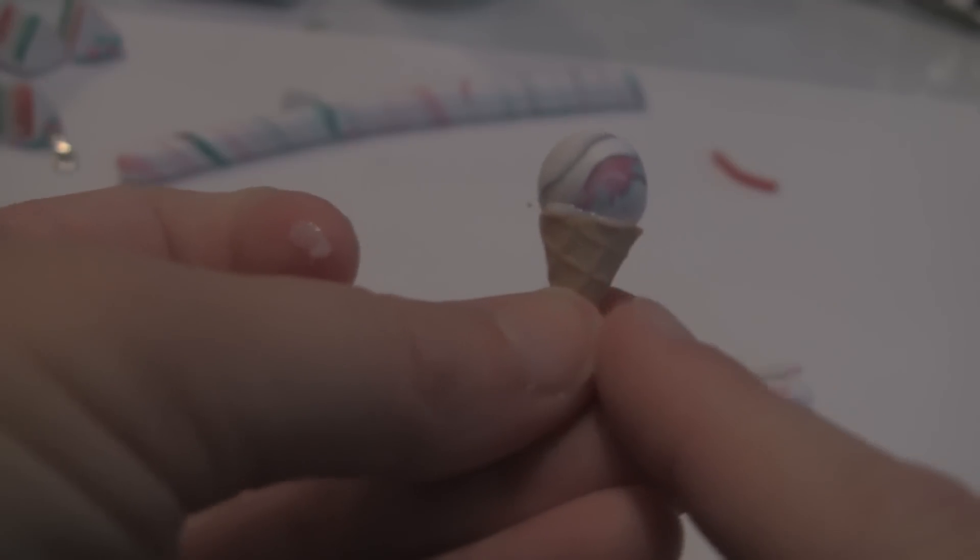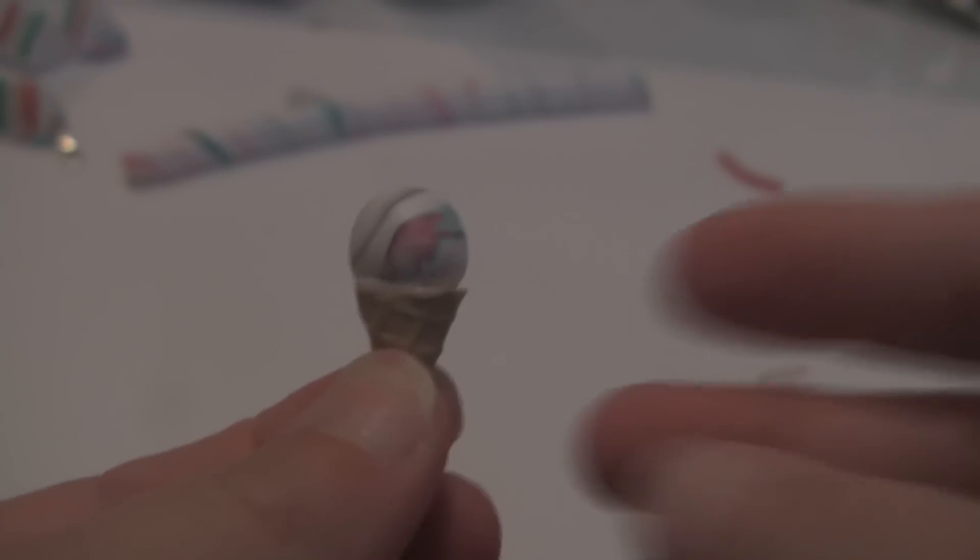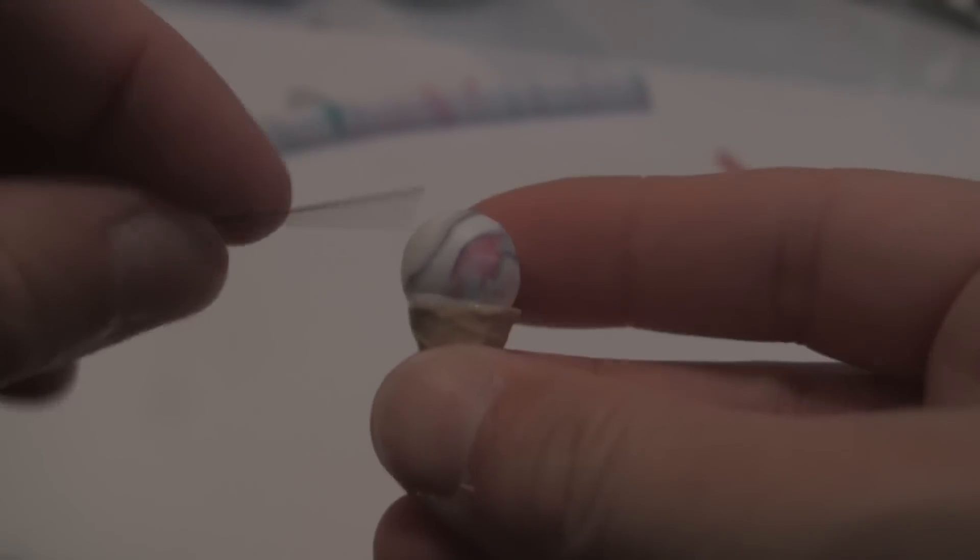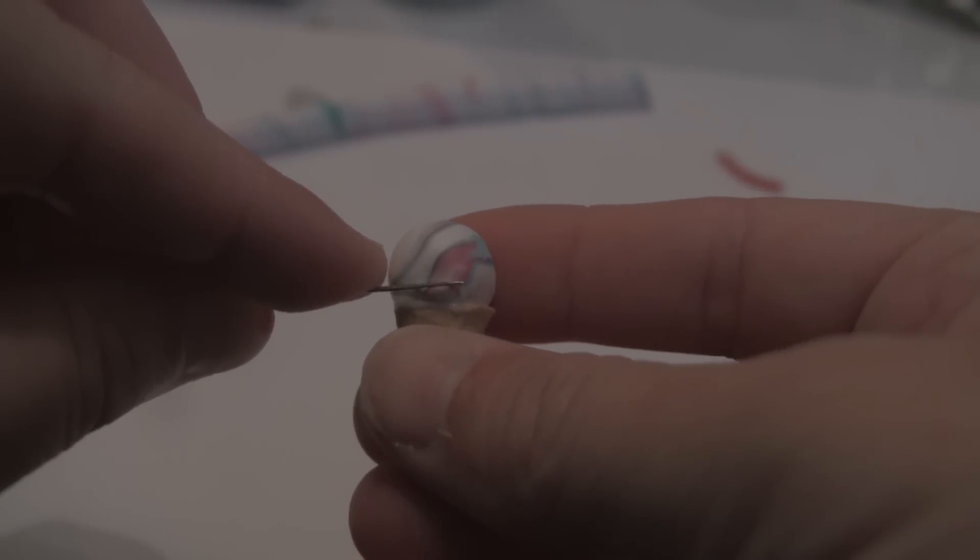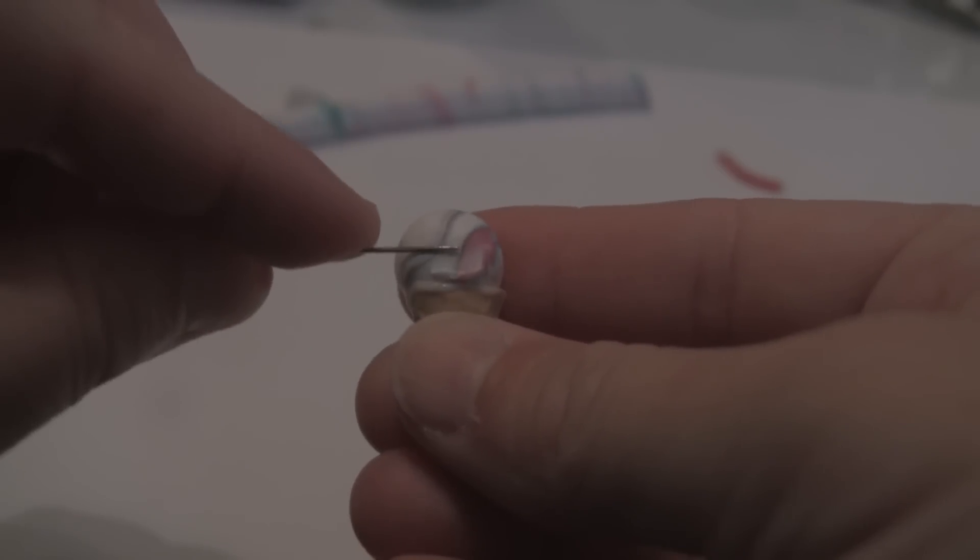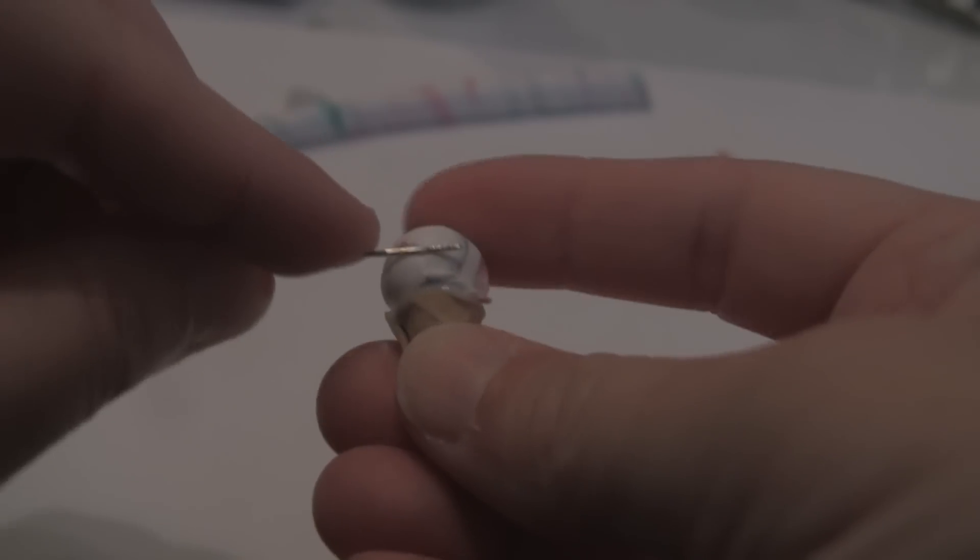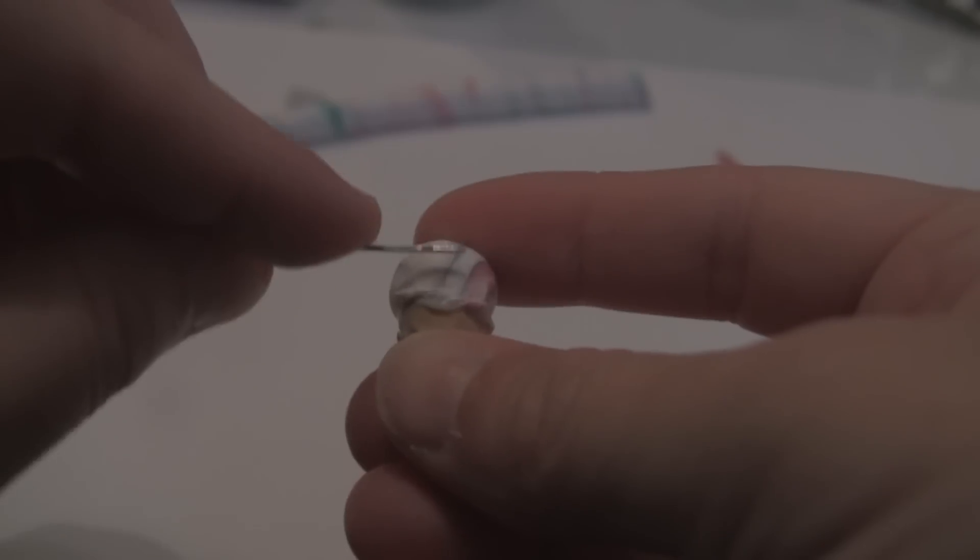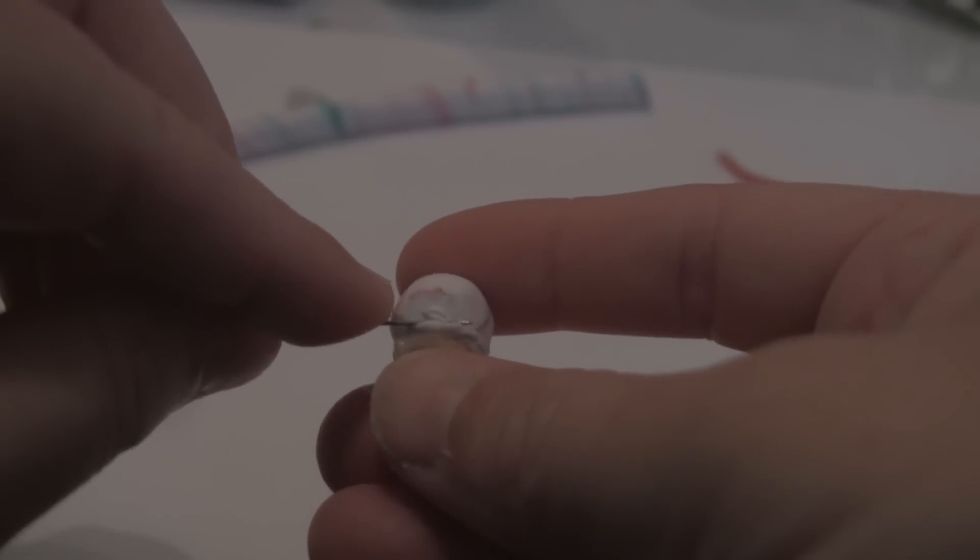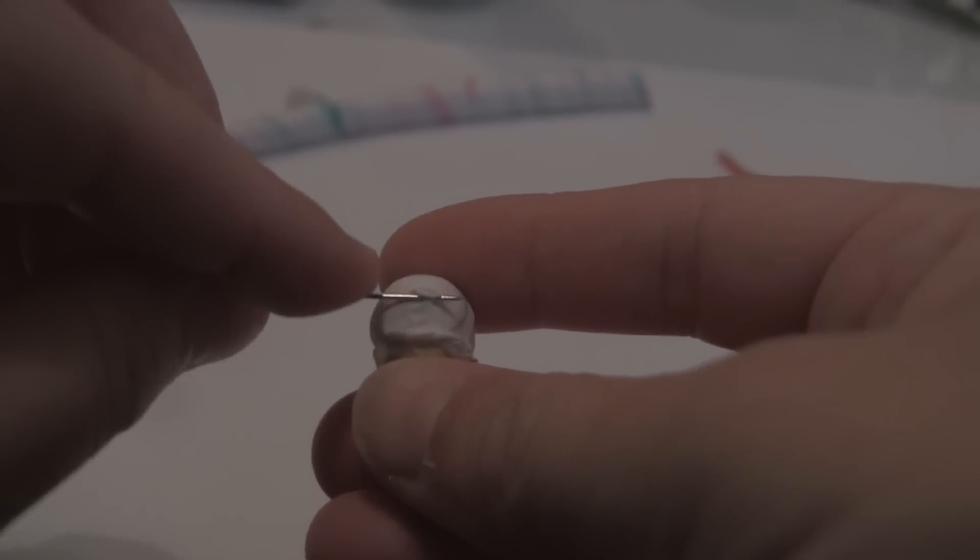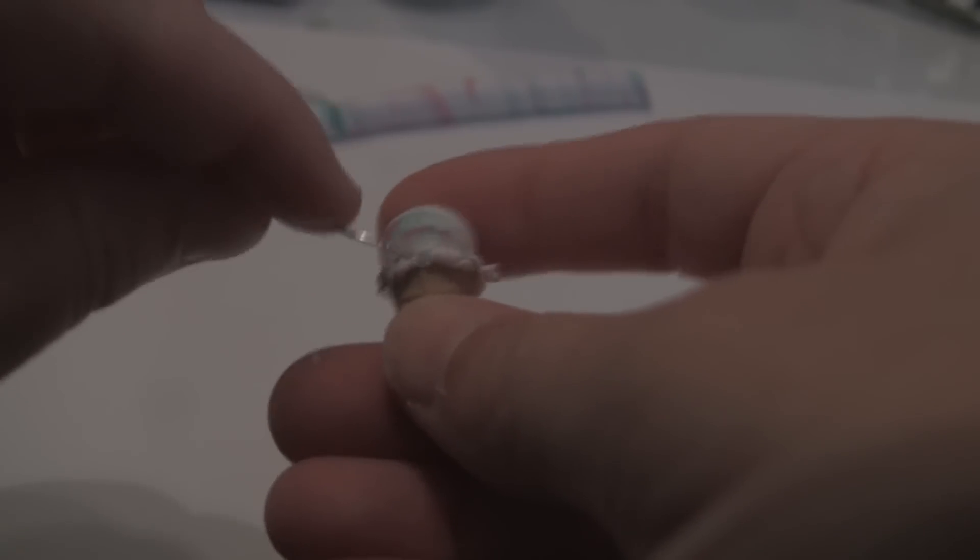I'm going to put a link to the cone tutorial in the description box. So here we are, and I'll try to keep this in frame. But I start pulling the scoop down all along the edges to create a little ridge. And guys, once you make the perfect ice cream cone, you can make a mold.